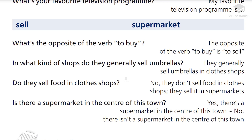Sell. Supermarket. What's the opposite of the verb to buy? The opposite of the verb to buy is to sell. In what kind of shops do they generally sell umbrellas? They generally sell umbrellas in clothes shops. Do they sell food in clothes shops? No, they don't sell food in clothes shops; they sell it in supermarkets. Is there a supermarket in the center of this town? Yes, there's a supermarket in the center of this town.